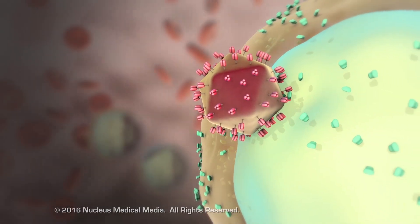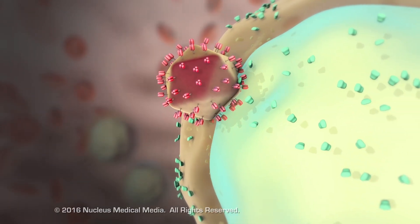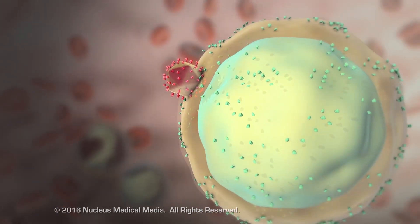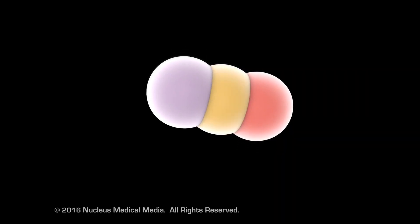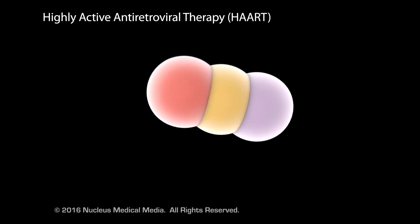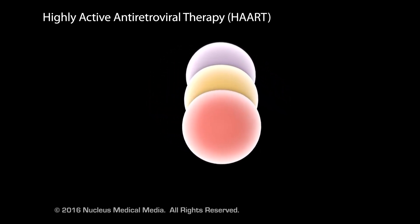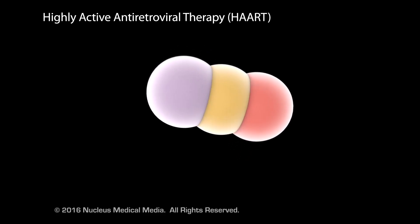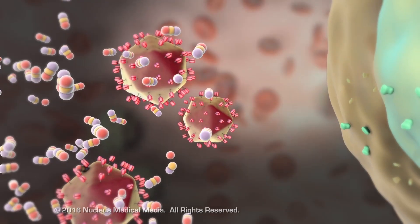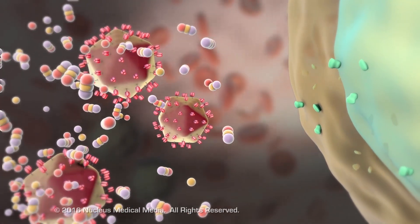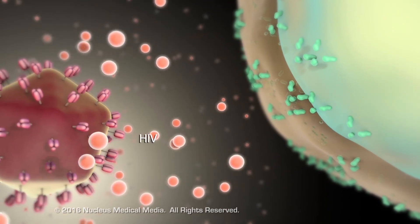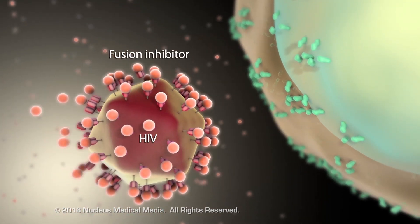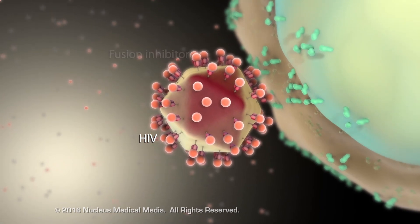Although there is no cure or vaccine for HIV infection or AIDS, medication can slow the progression of HIV infection. Anti-retroviral medications, such as highly active antiretroviral therapy, or HAART, combine several anti-HIV medications in a daily regimen. HAART attacks HIV at several points in its life cycle, slowing its replication. One drug in the cocktail, a fusion inhibitor, blocks HIV from binding to the cell.